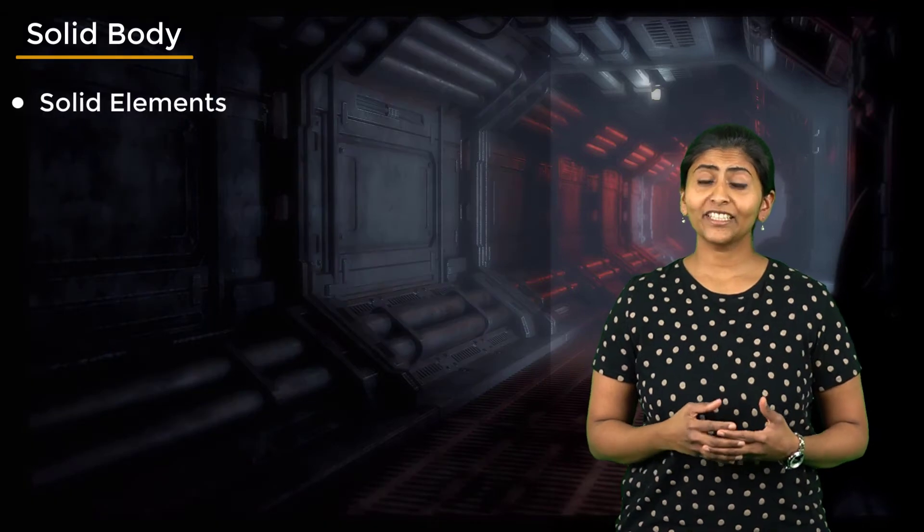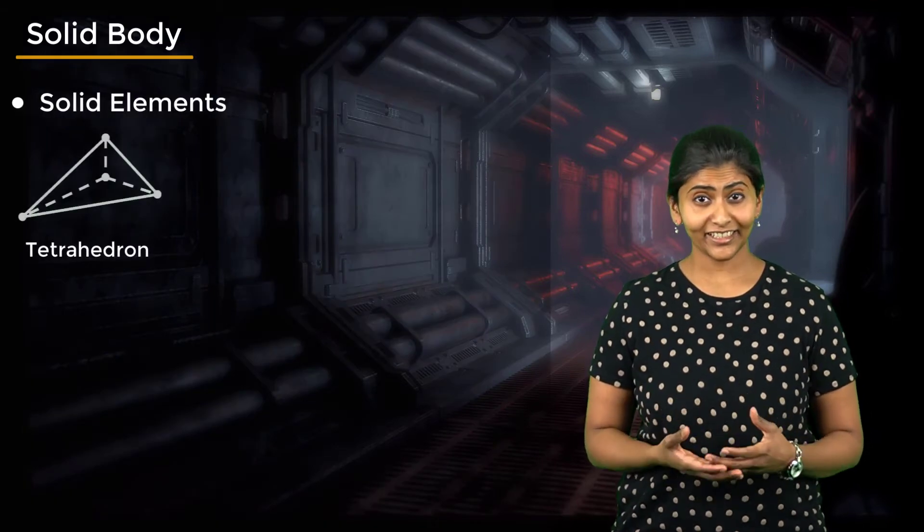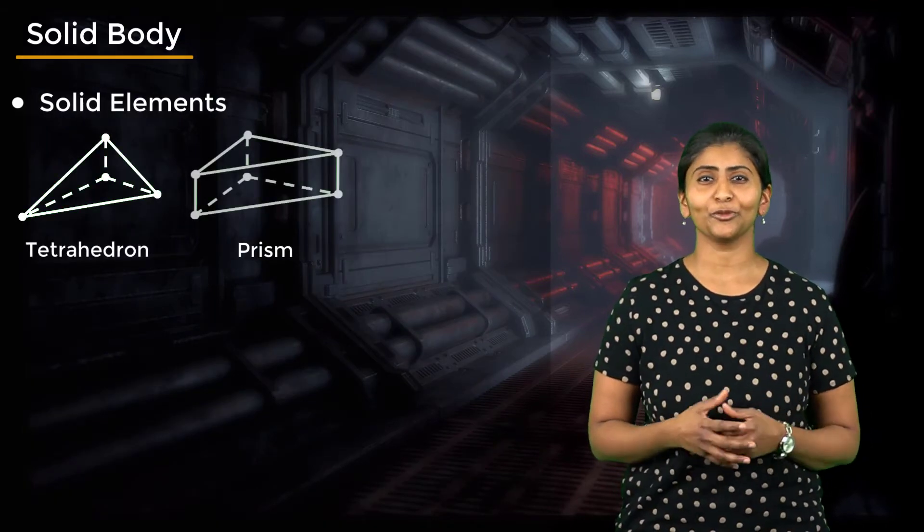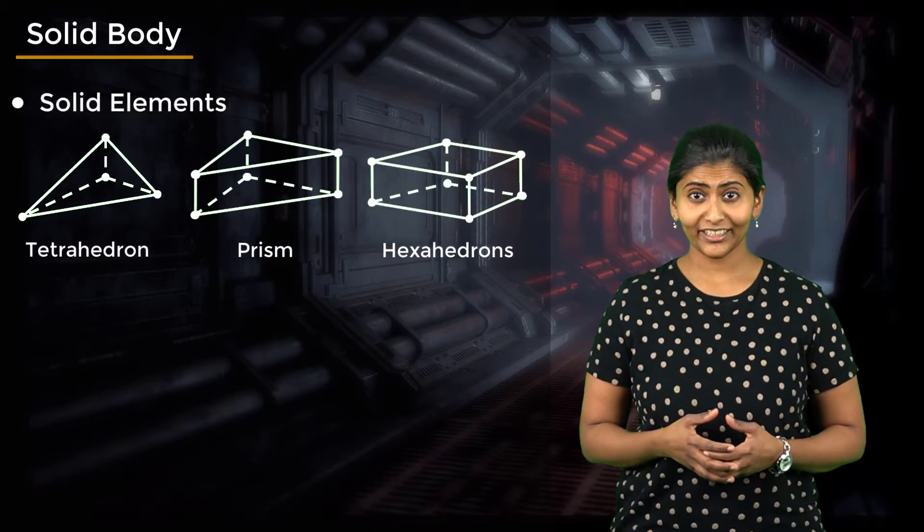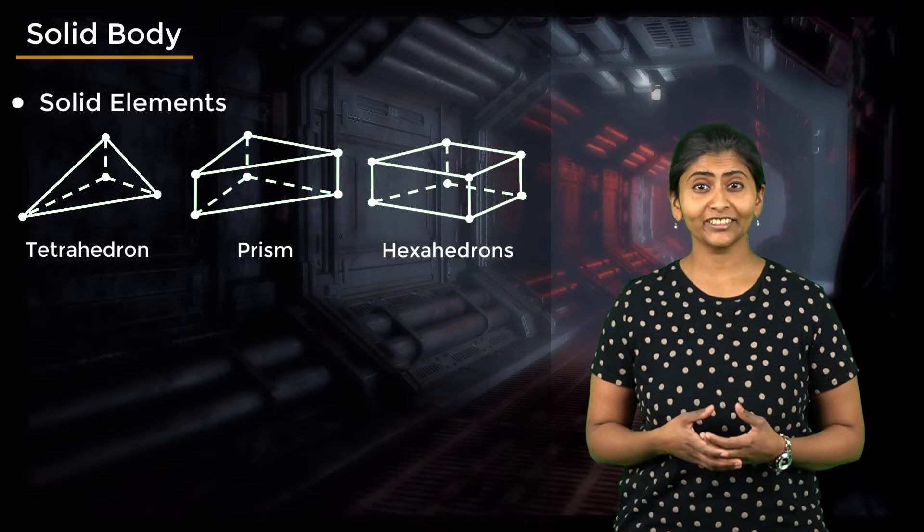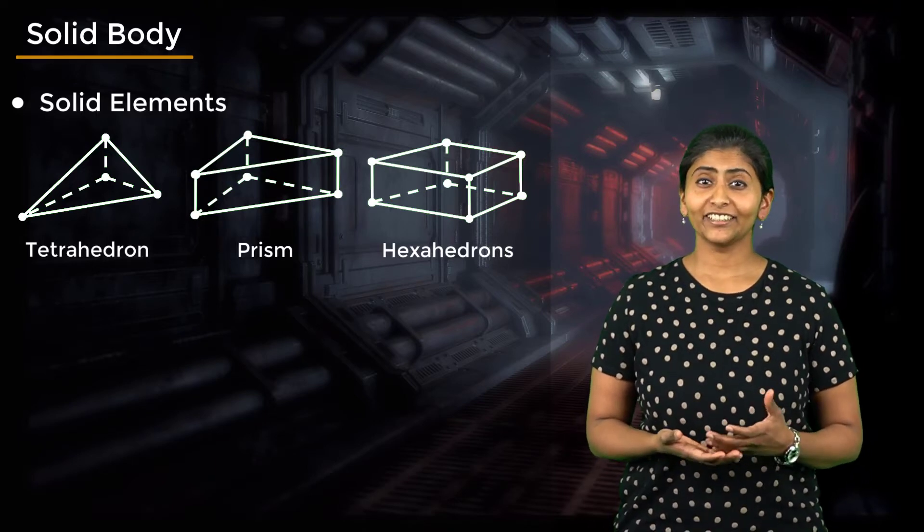First, let's discuss modeling a bolt as a solid body. The solid body may be discretized using 3D shapes such as tetrahedrons, prisms, or cubes. There are various solid elements like 8-noded hexahedron, 10-noded tetrahedron, 20-noded hexahedron, etc.